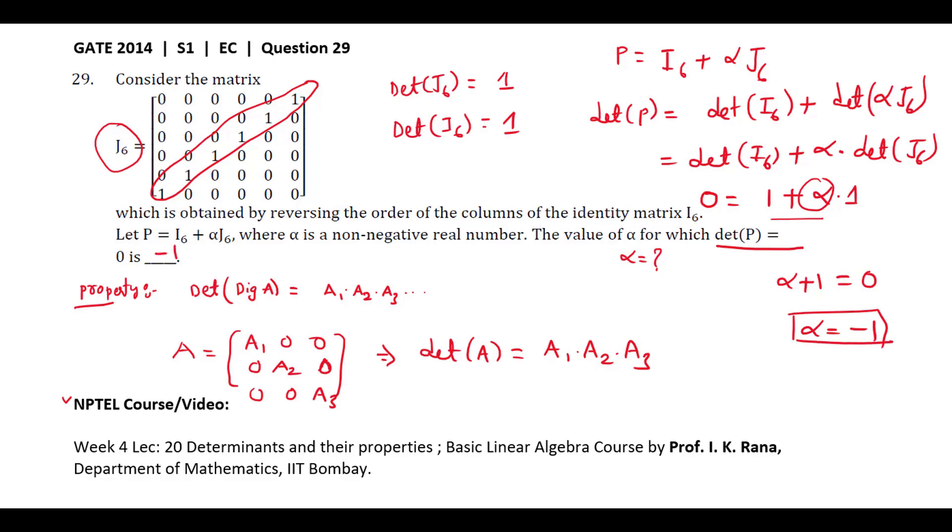The answer is minus 1. For alpha equals minus 1, determinant of P equals 0.